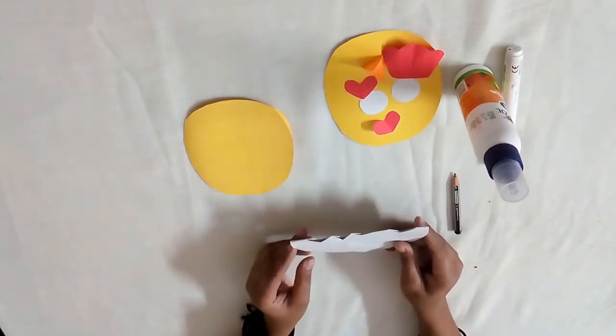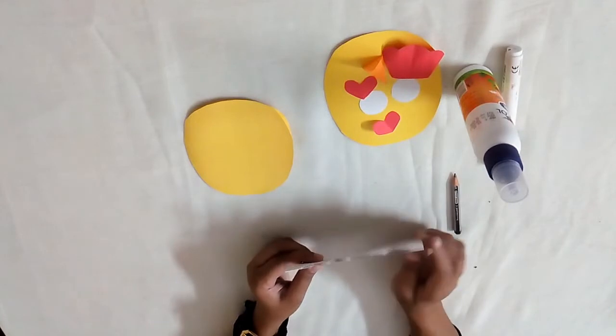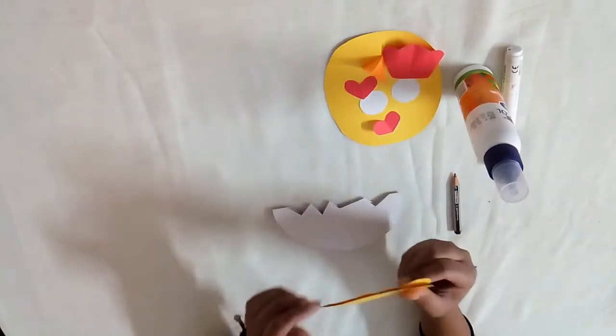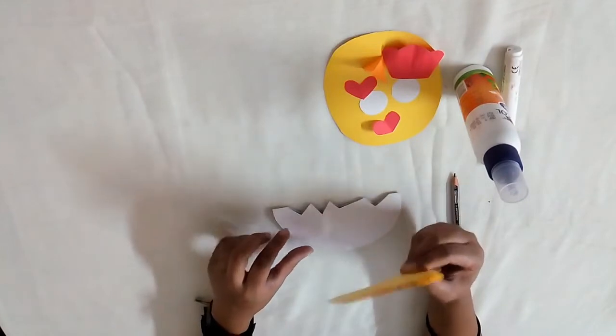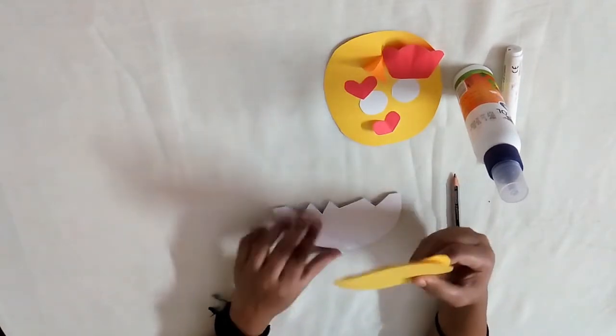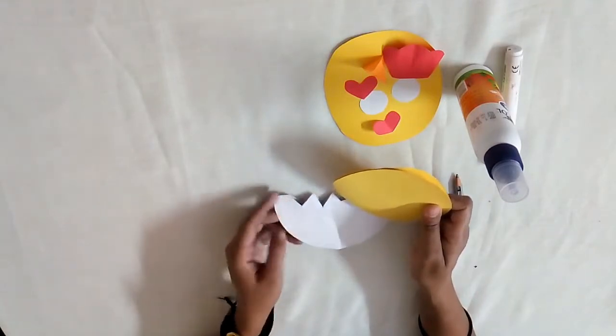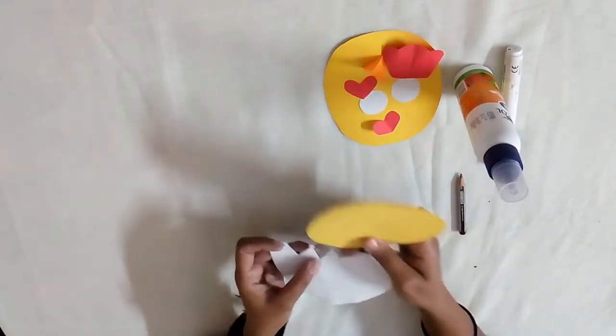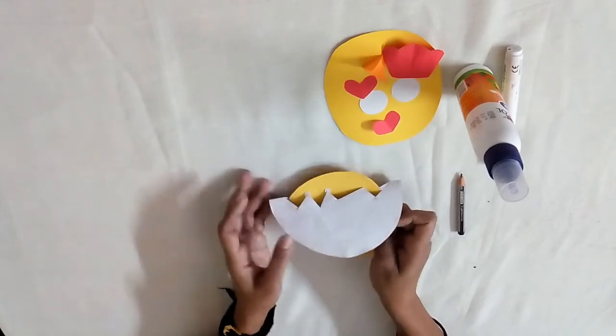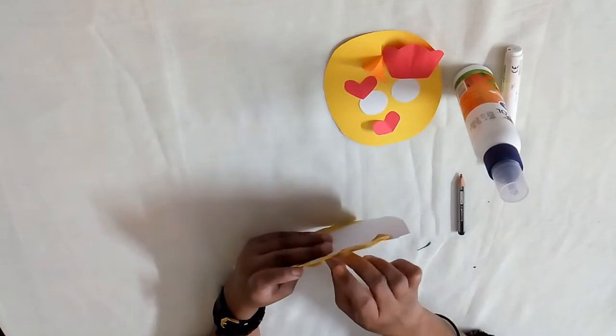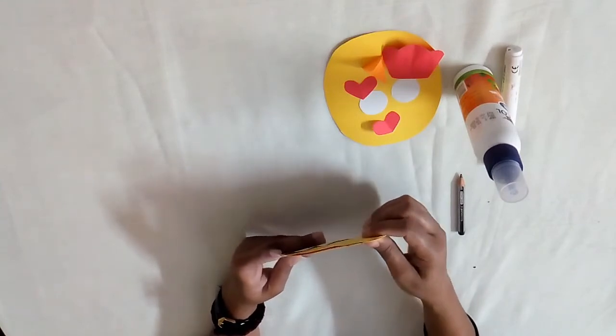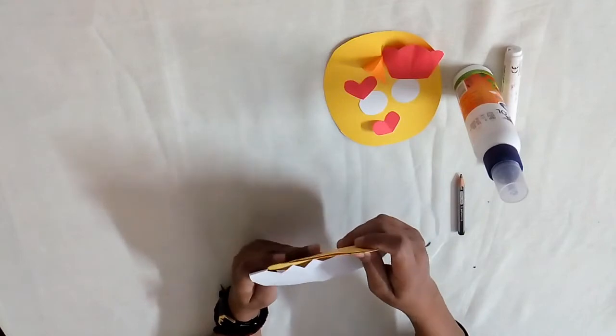The chick is ready to pop out by cracking the egg. Now take a yellow colored oval shaped paper. This will be the head popping out of broken egg. Now take this yellow shape and pass it through the cut in the white circle. Stick this yellow shape inside the white half circle.